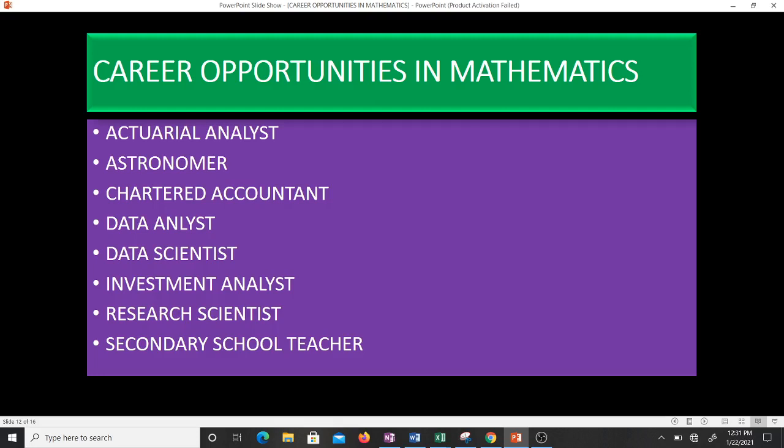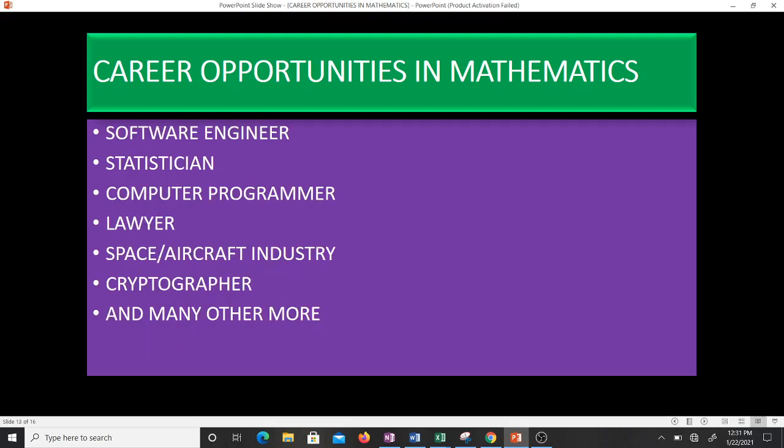You can become an actuary or an actuarial analyst. Actuaries are business executives who use mathematical and statistical skills to define and analyze complex problems arising in insurance and pension fields. With a strong foundation in mathematics you can become an actuary or actuarial analyst, an astronomer, a chartered accountant, a data analyst, a data scientist, an investment analyst, a research scientist, a secondary school teacher, a software engineer, a statistician, a computer programmer, a lawyer. You can work in the space or aircraft industry, you can be a cryptographer, and many others.